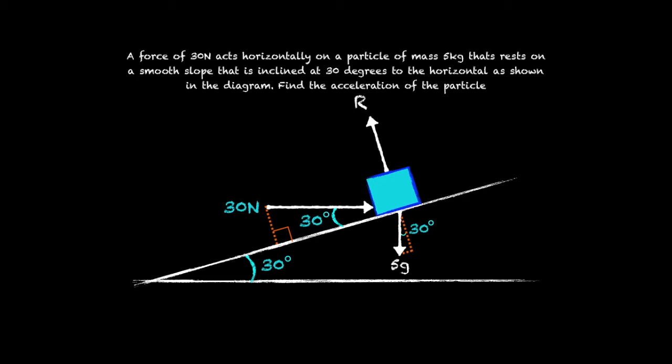A quick use of our calculator will tell us that 30 cosine 30 is greater than 5g sine 30 and so that tells us the acceleration of the particle is up the slope.